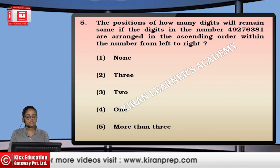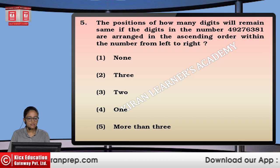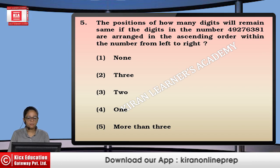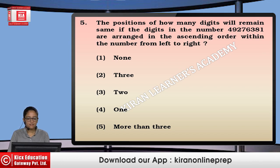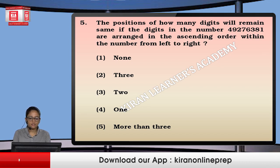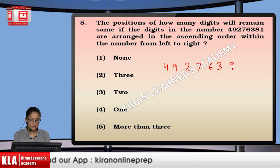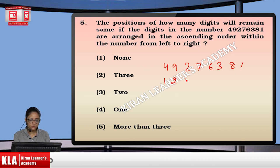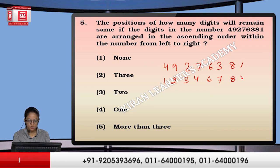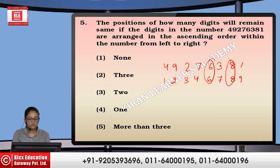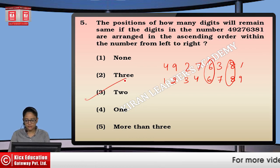Next: how many digits will remain in the same position if the digits in the number 4, 9, 2, 7, 6, 3, 8, 1 are arranged in ascending order left to right? Arranging gives 1, 2, 3, 4, 6, 7, 8, 9. Looking for unchanged positions, we find 2 digits — 6 and 8 — do not change their place after rearranging. So the answer is the 3rd option.